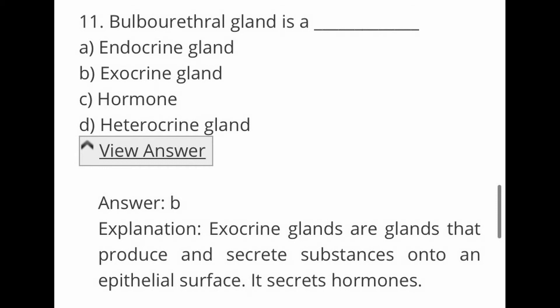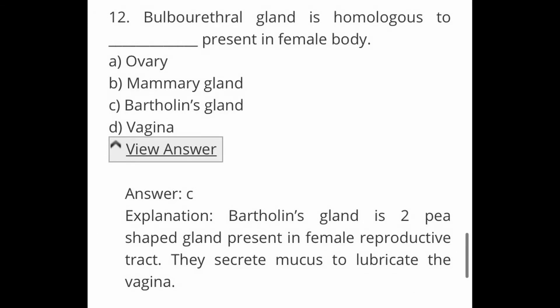Next question: the bulbourethral gland is homologous to dash present in the female body. Options are A. Ovary, B. Mammary gland, C. Bartholin's gland, and D. Vagina. The answer is C, Bartholin's gland. Bartholin's gland is a pea-shaped gland present in the female reproductive tract. They secrete mucus to lubricate the vagina.